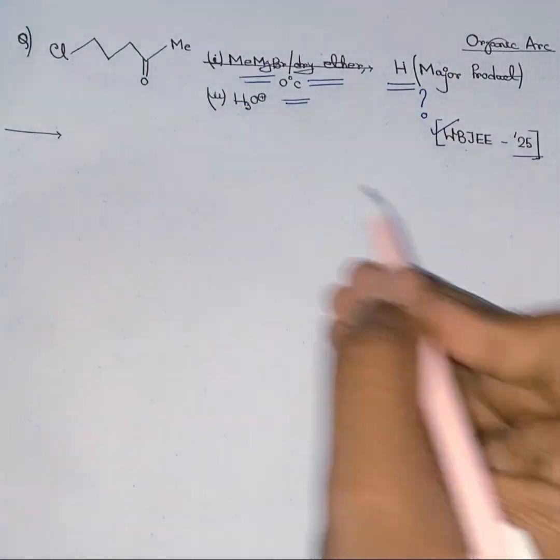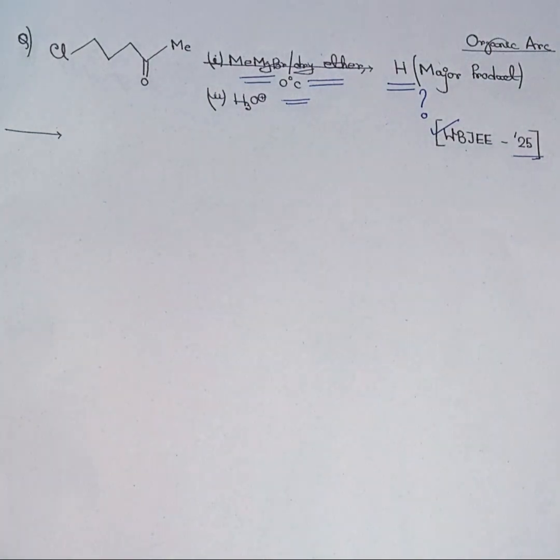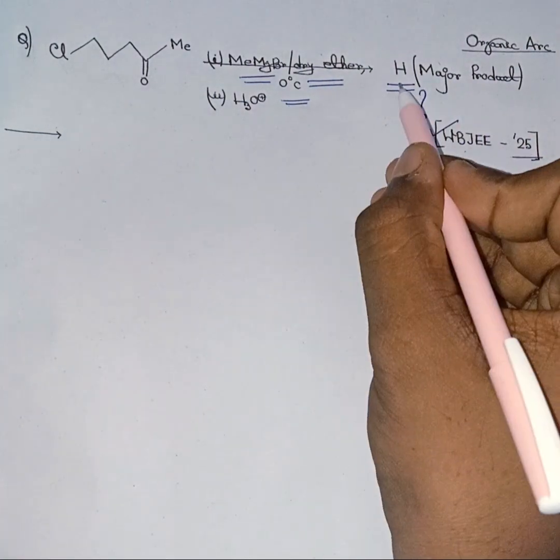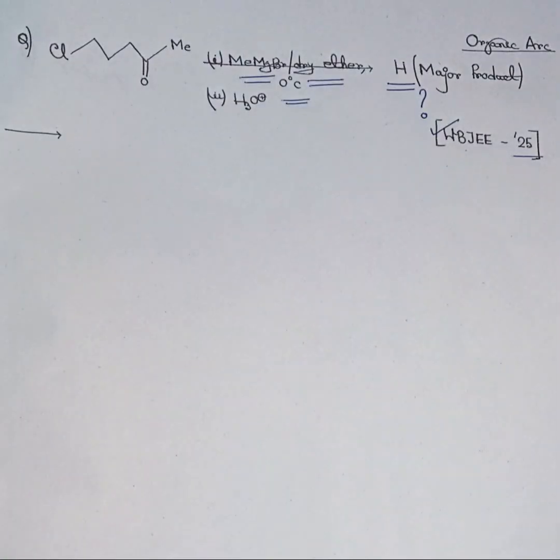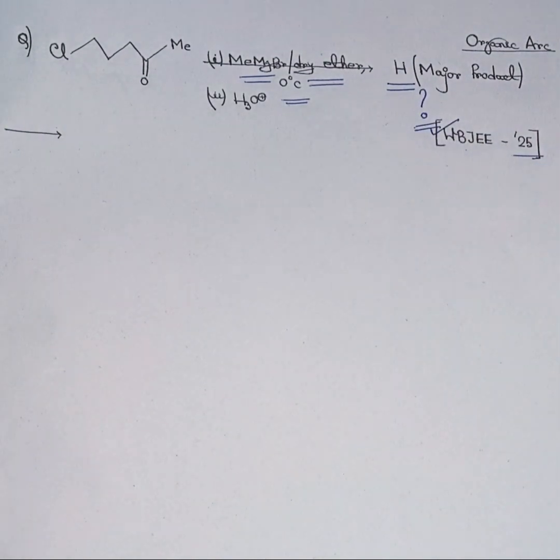In this organic reaction, this organic compound participates in a two-step organic reaction and forms the major product H. We have to identify the major product H. I've already marked it with this question mark.